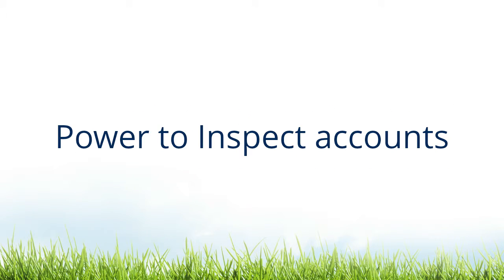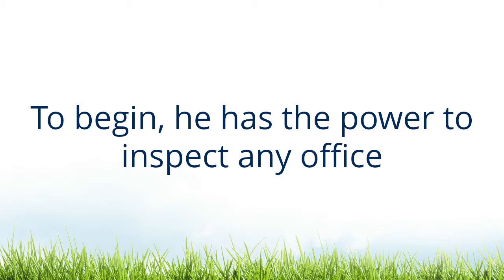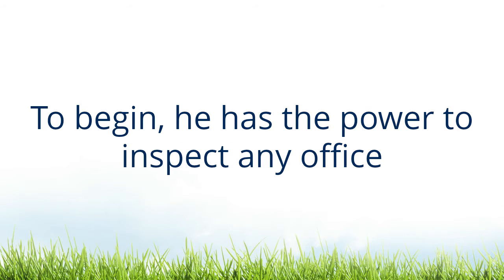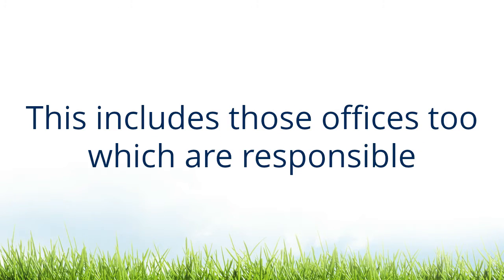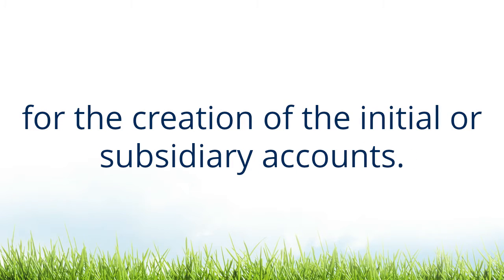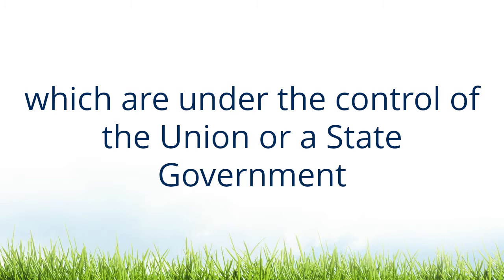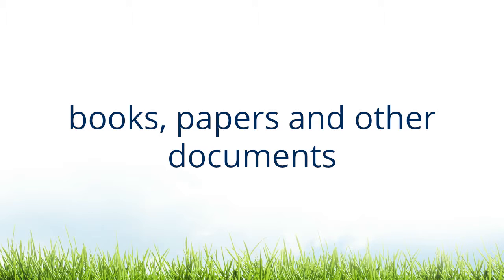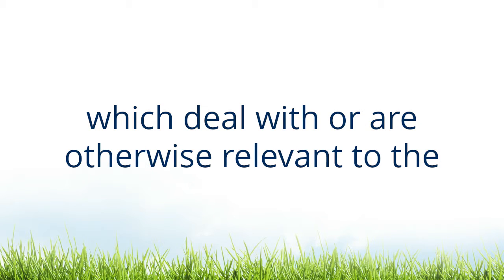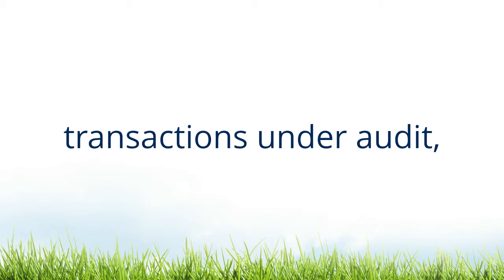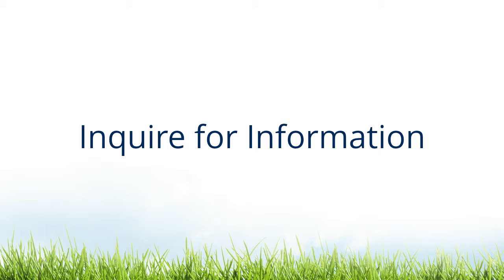The Power to Inspect Accounts. To begin, he has the power to inspect any office of accounts which are under the control of the union or of a state government. This includes those offices, too, which are responsible for the creation of the initial or subsidiary accounts. Further, he has the power to order the office of accounts under the control of the union or state government to send their accounts, books, papers, and other documents which deal with or are otherwise relevant to the transactions under audit to specified places.